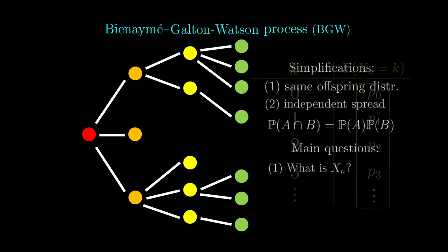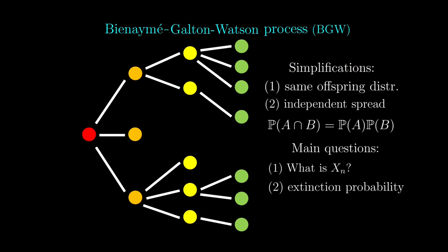The second question is what's called the extinction probability. This is the probability that at some point, the entire generation of patients just stop spreading coronavirus entirely.